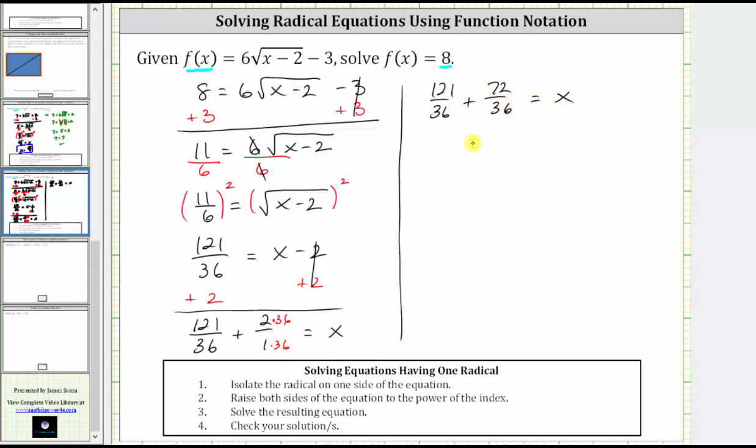Now to determine the sum, the denominator remains the same, and we add the numerators. 121 + 72 = 193. So we have 193/36 = x, or x = 193/36.